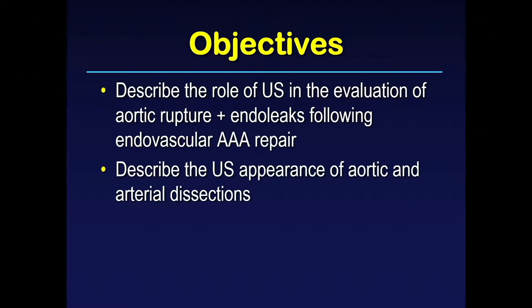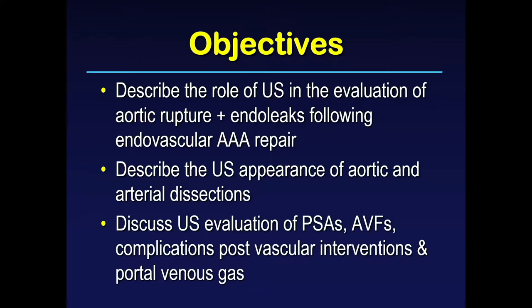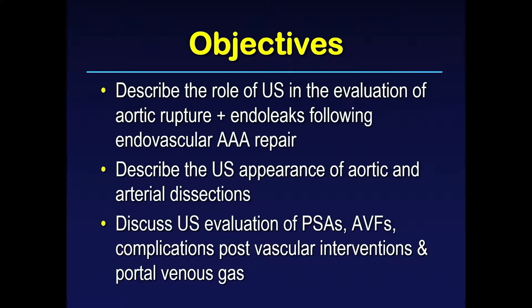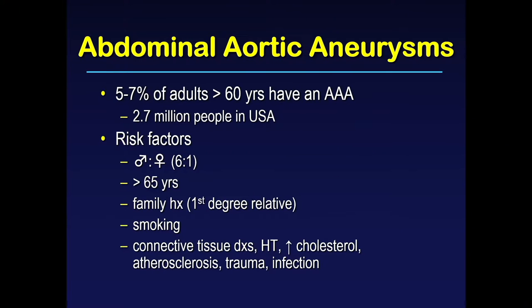We're going to talk about the ultrasound appearance of aortic and arterial dissections. At the end, we'll cover a few less common vascular emergencies: pseudoaneurysms, arteriovenous fistulas, complications following vascular interventions, and lastly portal venous gas. Starting with abdominal aortic aneurysms — it's estimated that up to 7% of adults in the United States over age 60 have a triple-A, amounting to just under 3 million people.